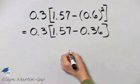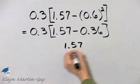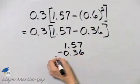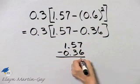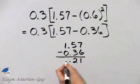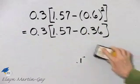I'm just going to go off to the side. This is 1.57 minus 0.36. 7 minus 6 is 1, 5 minus 3 is 2, decimal point, 1 minus 0 is 1, so I have 1.21.